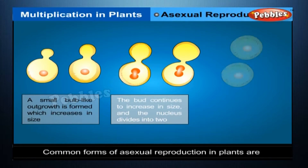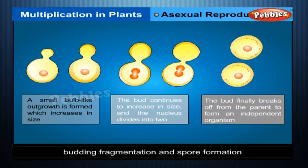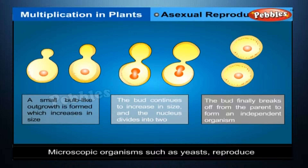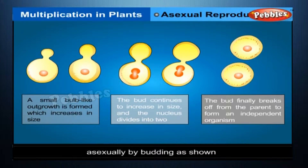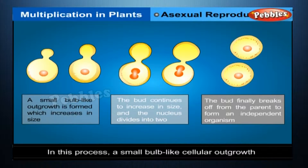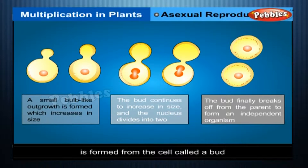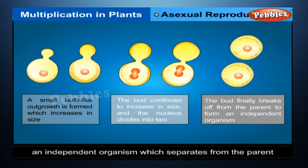Common forms of asexual reproduction in plants are budding, fragmentation, and spore formation. Budding: microscopic organisms such as yeasts reproduce asexually by budding. In this process, a small bulb-like cellular outgrowth is formed from the cell, called a bud. This bud keeps on increasing in size and forms an independent organism which separates from the parent.